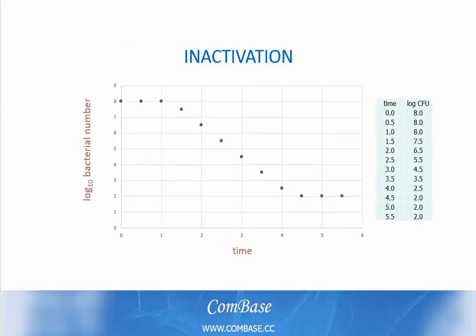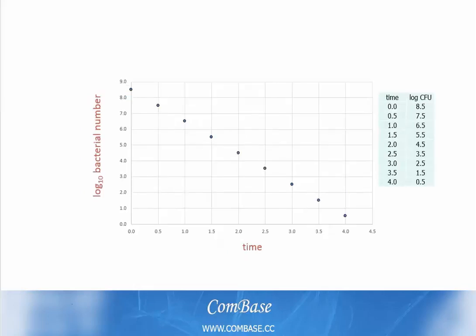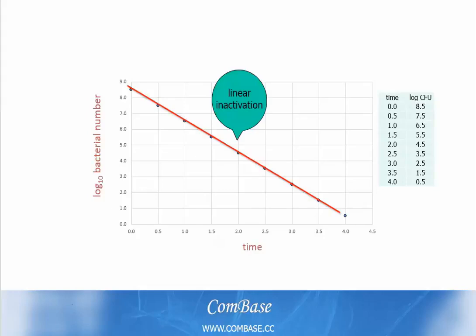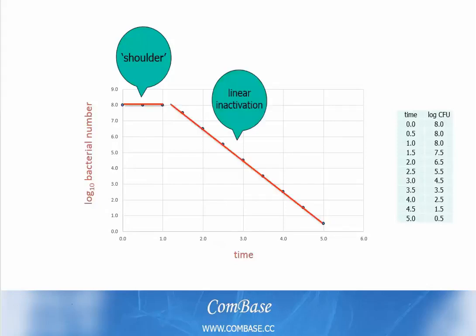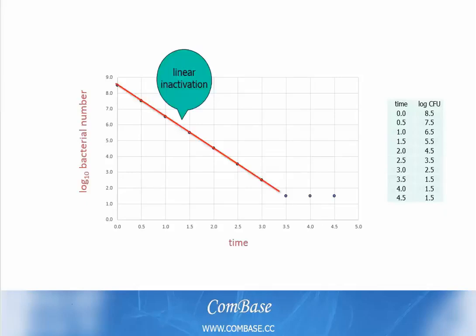In the case of bacterial inactivation, we can see different types of curves which are the result of thermal and non-thermal forms of stress. A common profile of thermal stress is linear inactivation, where individual cells in the population die at a similar rate. However, populations of bacteria can show two different phases of inactivation — this may include a shoulder where the bacteria display slower inactivation followed by linear inactivation, or bacteria may die in a linear manner followed by a tail of resistant cells.